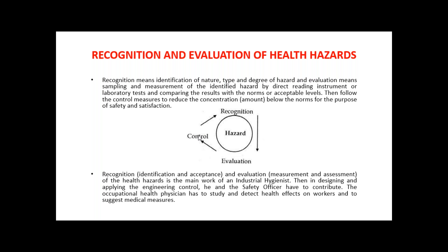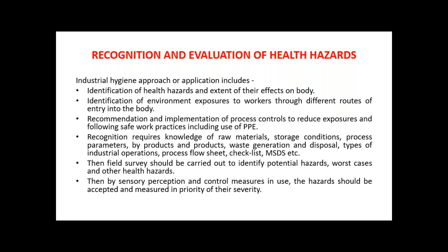Control can be at the air path level, or at the end level if chemicals are accidentally inhaled, absorbed through the skin, ingested orally, or entered through the eyes. These are the general guidelines to recognize, evaluate, and control health hazards when dealing with toxic chemicals. The industrial hygiene approach involves: identification of health hazards and their extent on the body, identification of environmental exposure to workers, and recommendation and implementation of safe practices or use of PPE.